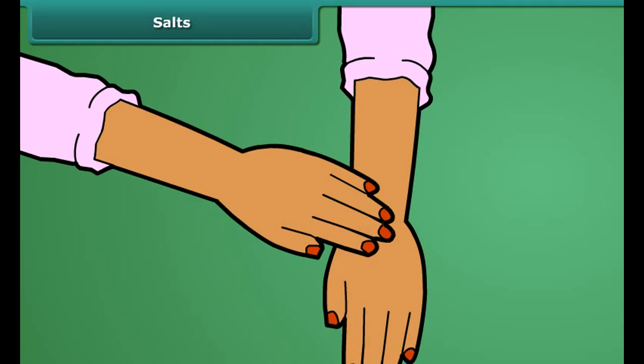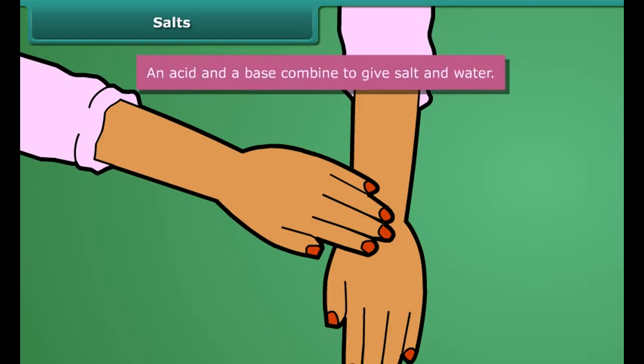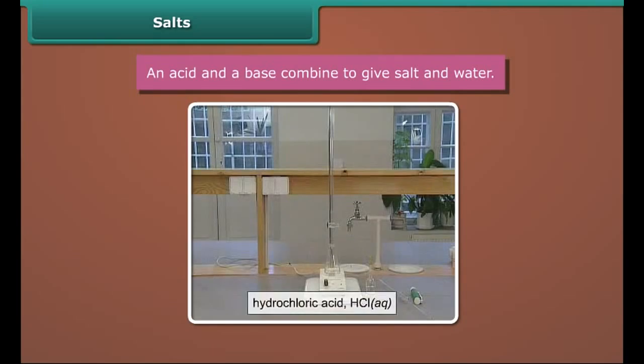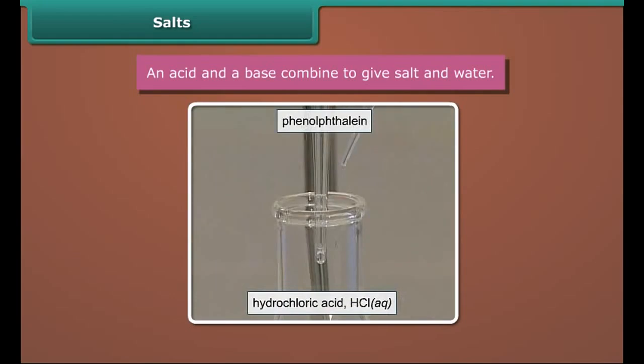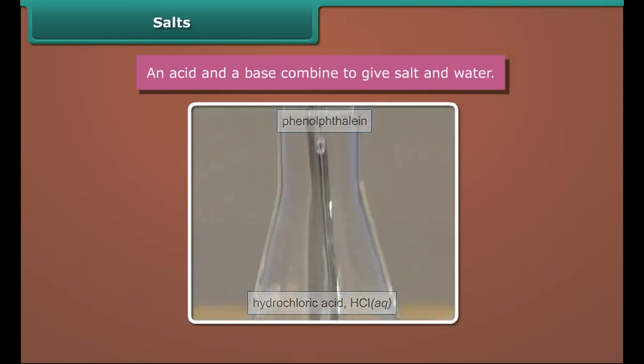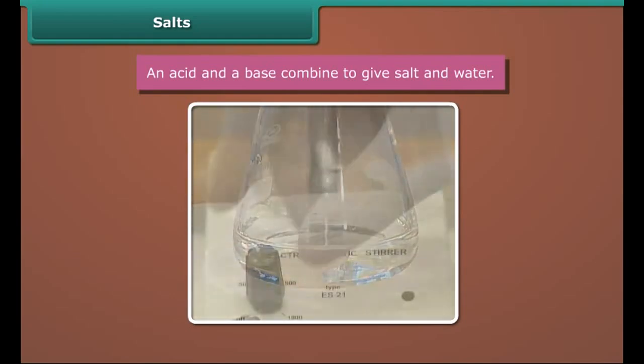We use chalk in schools for writing on the blackboard. Is it a base or an acid? Chalk gives a basic solution when dissolved in water; it is called calcium carbonate chemically. Match the following — tick the options in column A and click on the related options in column B. Do you know you feel relieved on applying baking soda on an ant sting? This is because baking soda neutralizes the acid present in the ant sting.